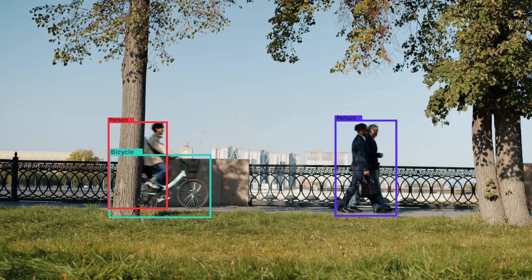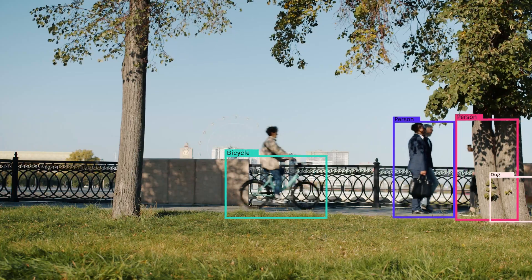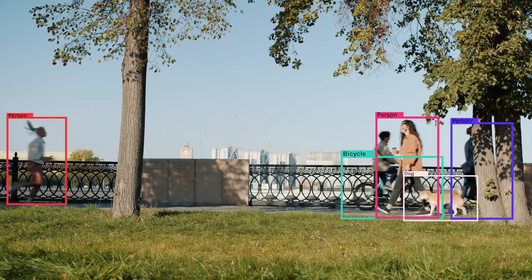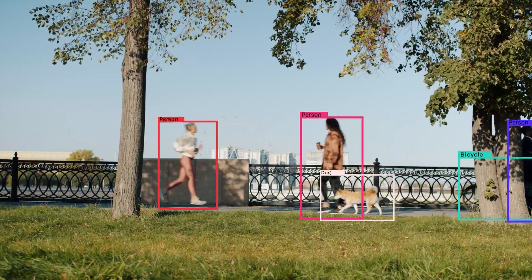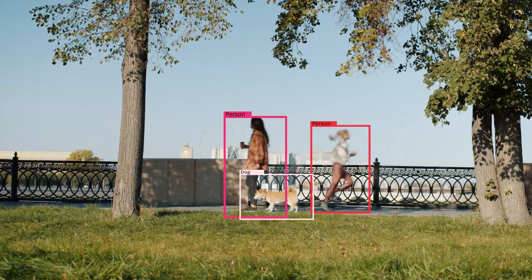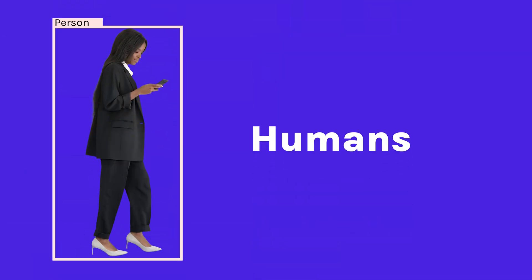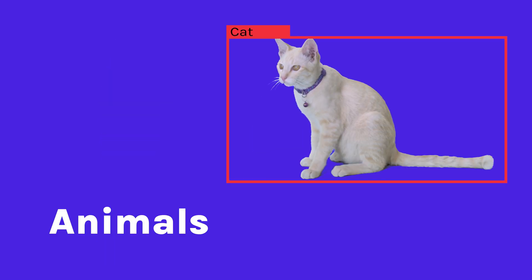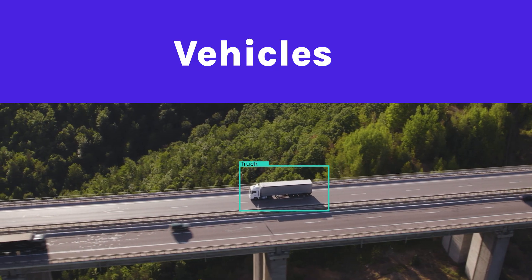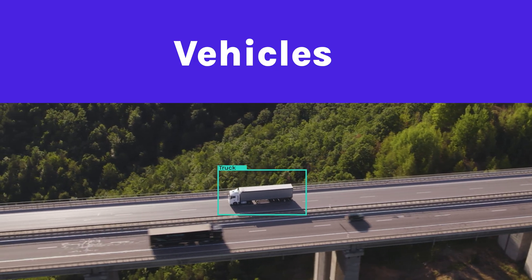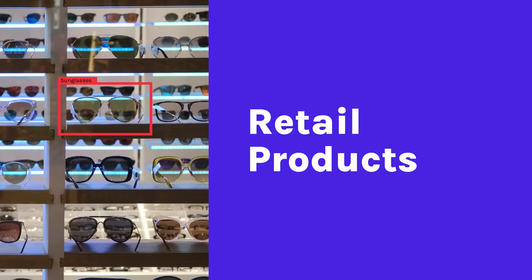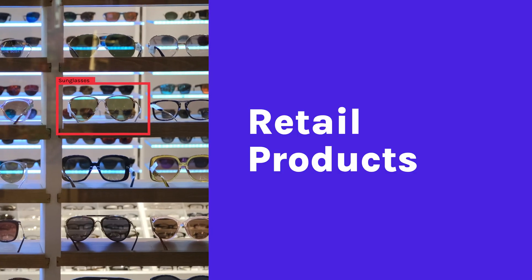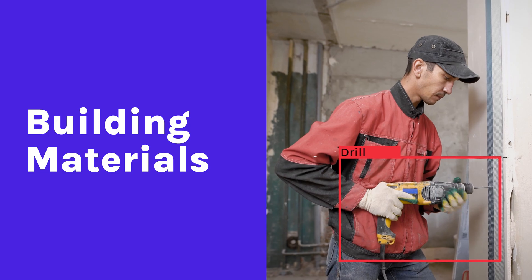Object detection is a common computer vision technique that locates specific types of objects in an image. Those objects can be anything from humans, animals, or vehicles, to very specific items such as retail products or types of building materials.